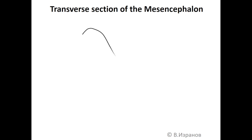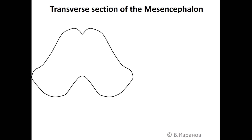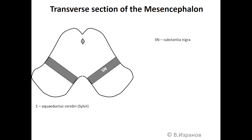Transverse section of the mesencephalon. Here is the outer relief of the mesencephalon. Number one is aqueductus cerebri, or aqueductus sylvii. SN is substantia nigra. Two blue dotted lines divide the mesencephalon into three portions.